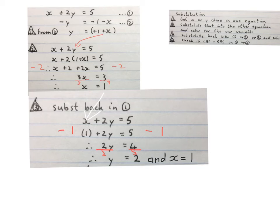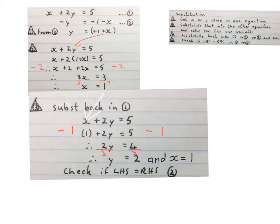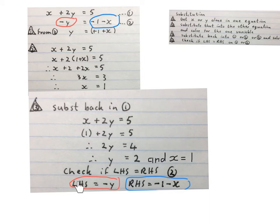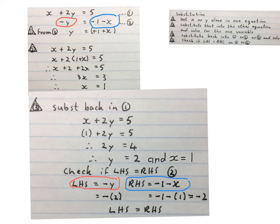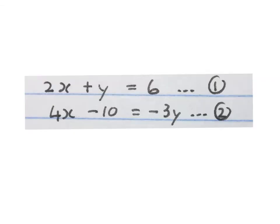To see if my calculations were right, I check whether the left hand side equals the right hand side on either equation. I used equation two to check. The left hand side of equation two is minus Y and the right hand side is minus one minus X. I substitute the X and Y values in, simplify — the left hand side gives minus two and the right hand side also gives minus two. Because they are equal, I know my calculations were right. Final answer: Y equals two and X equals one.